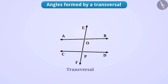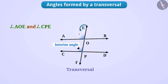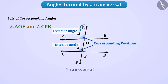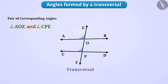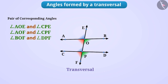Moving forward, can you tell any relation between angle AOE and angle CPE? Here, both have different vertices and are on the same side of the transversal. But angle CPE is an interior angle, whereas angle AOE is an exterior angle. These two angles form a pair called corresponding angles. Corresponding angles are formed at the corresponding positions of two lines, like above and below or left and right. Other pairs of corresponding angles are: angle AOF and angle CPF, angle BOF and angle DPF, and angle DPE and angle EOB.